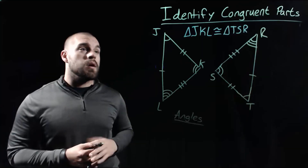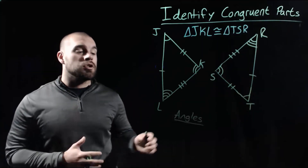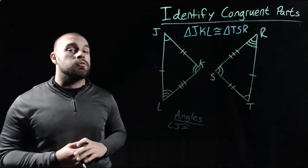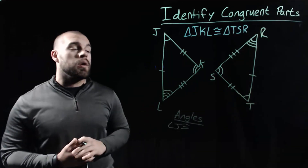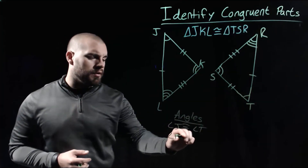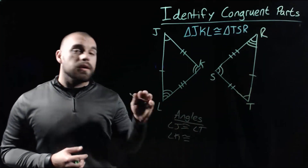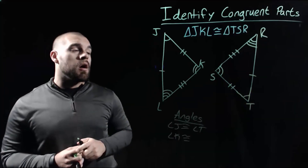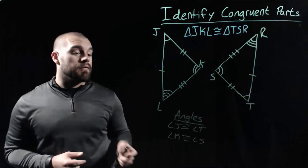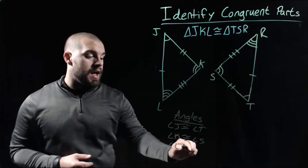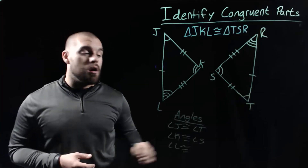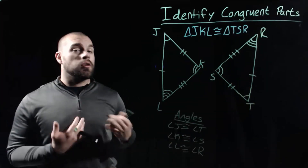Starting with the triangle on the left-hand side, let's look at angle J first. Angle J has one arc in it, so we need the angle in the other triangle that also has one arc — that's going to be angle T. Next, angle K has two arcs in it, so we need the one that also has two arcs, which is angle S. Our last angle from the first triangle is angle L, and the only angle we haven't used from the other triangle is angle R. So those are all of our congruent angles.